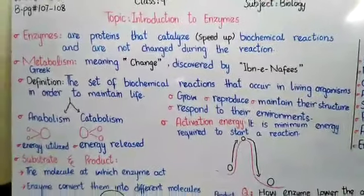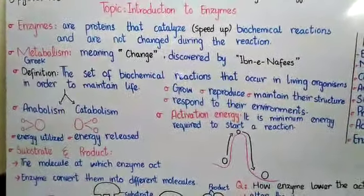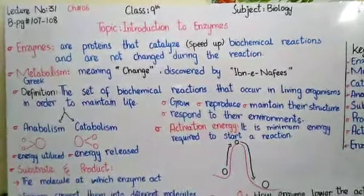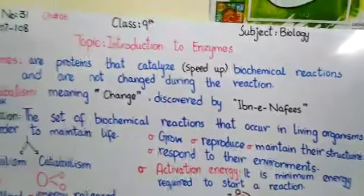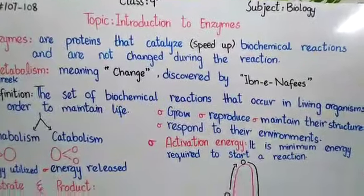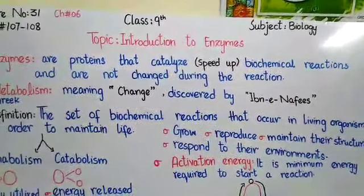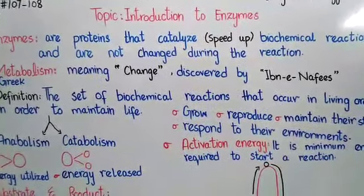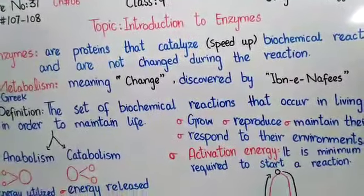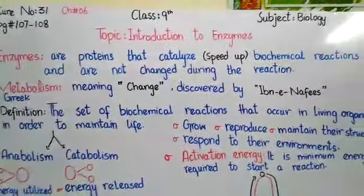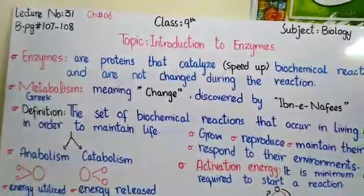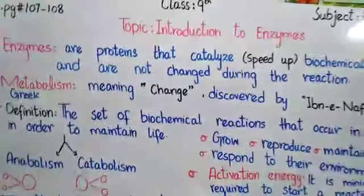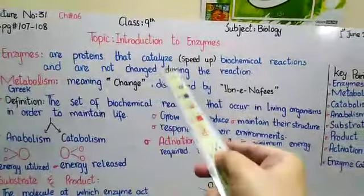If there are enzymes, then the chemical reactions will be fast; if there are no enzymes, then the speed or rate of chemical reactions will be reduced. Enzymes are actually proteins — and you know that proteins are made of amino acids. So enzymes are proteins which control the speed of chemical reactions in your body. Without enzymes, these reactions would take place very slowly, not enough to keep you alive. Enzymes are proteins that catalyze and speed up biochemical reactions and are not changed during the reaction.